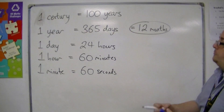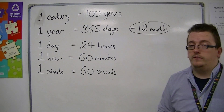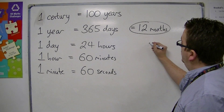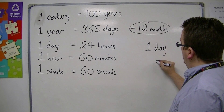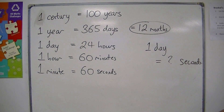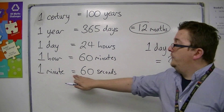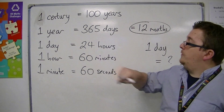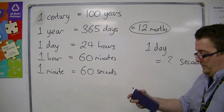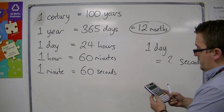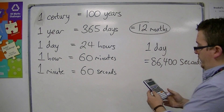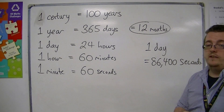Every hour is split up into 60 minutes, and every minute is split up into 60 seconds. So if you had to work out how many seconds there were in one day, it is 60 seconds in each minute, 60 minutes in each hour, 24 hours in each day. So 60 times 60 times 24 — I'm going to let the calculator do it — gives 86,400 seconds. That's how many seconds there are in one day.